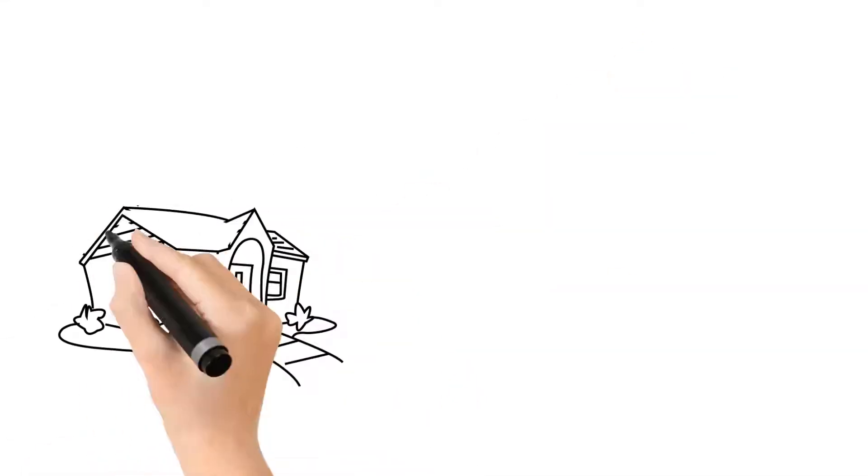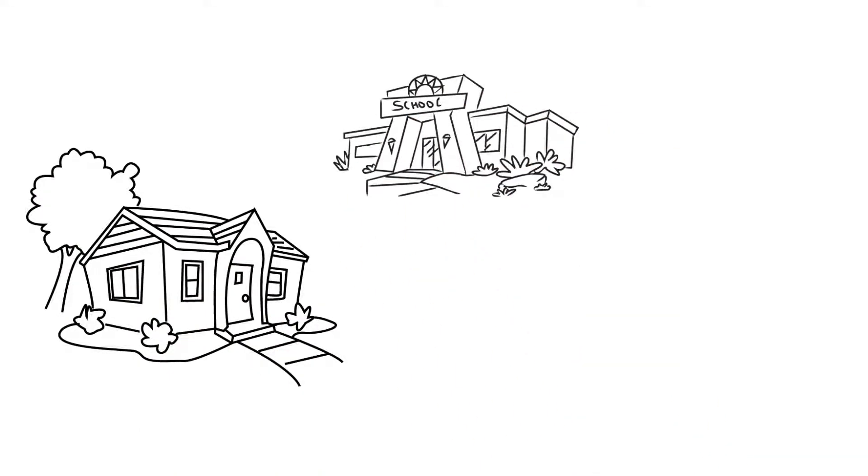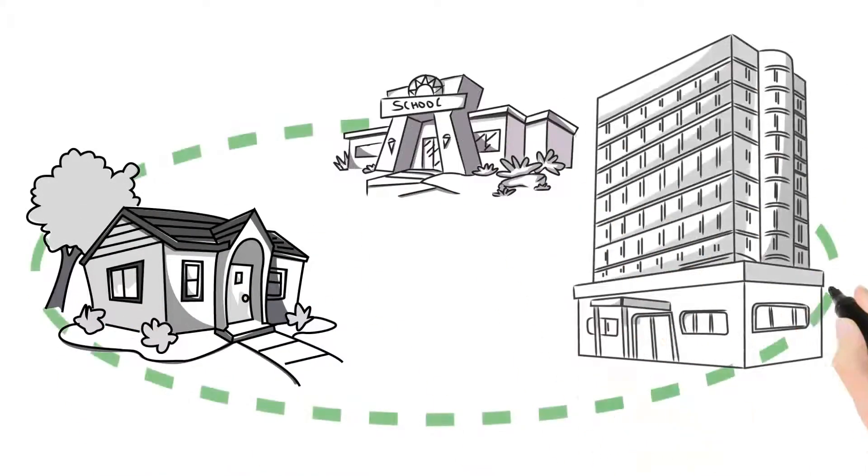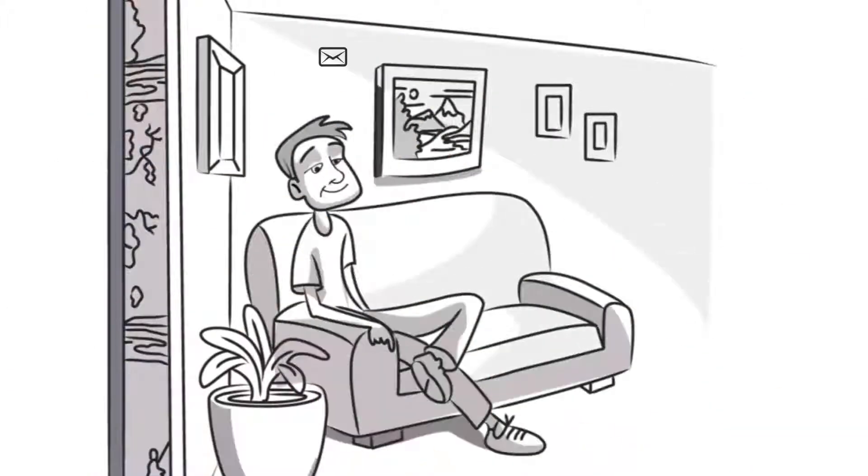You can also create places. All you have to do is make a virtual fencing around your home, school, neighborhood, or any place of your choice and associate it to a member or group. Once a member enters or exits the area, you will automatically receive a message.